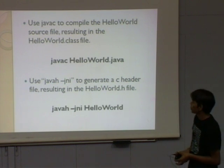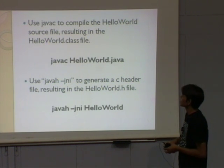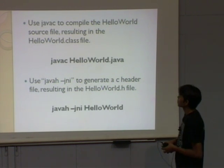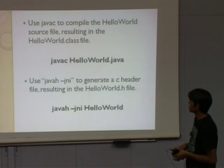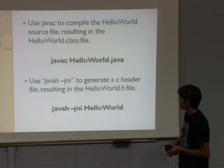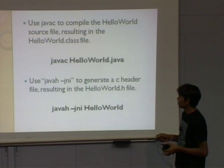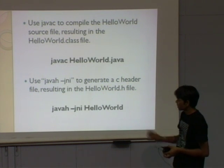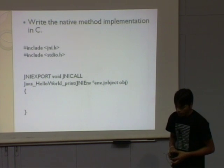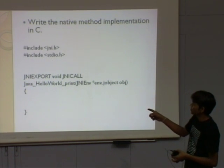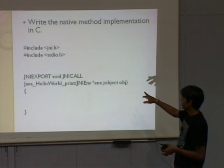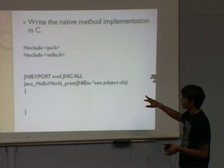We have to compile HelloWorld.java, which generates a HelloWorld.class file. Then we generate a HelloWorld.h C header file using javah -jni. The content of HelloWorld.h contains the prototype of the print method, which is automatically generated.